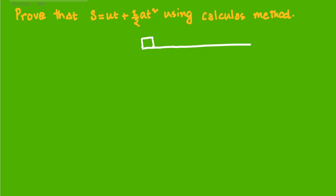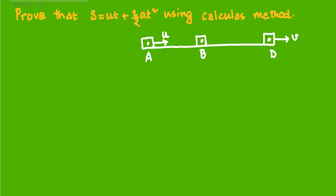We can draw a diagram. A body initially was at the point A. It starts its motion with an initial velocity u, and finally it reaches the point D. At that point it continues to move with final velocity v, and the body will cross two intermediate points B and C between A and D.